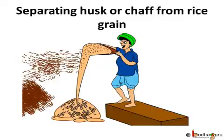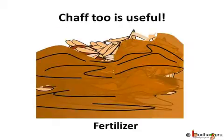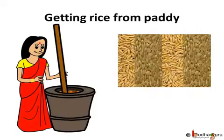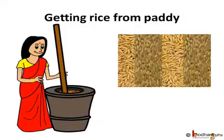The rice grain is further processed. The chaff is not thrown away — it is used as livestock fodder and can also be used as fertilizer. Not all the chaff can be separated by winnowing, and many rice grains might still be covered by chaff. So the remaining chaff is separated using other methods, like pounding using a large mortar and pestle, which are usually made of wood and operated by one or more people. Even machines may be used for this.